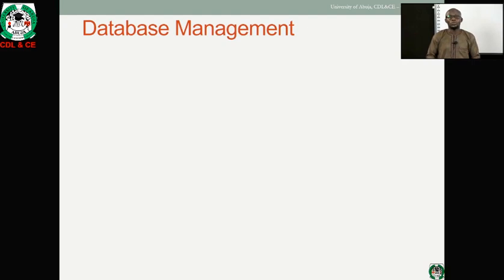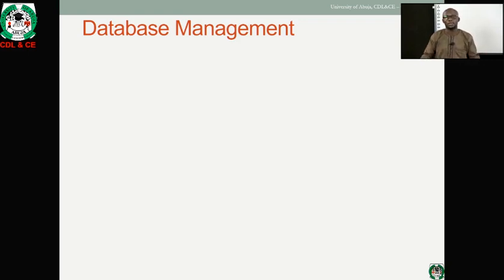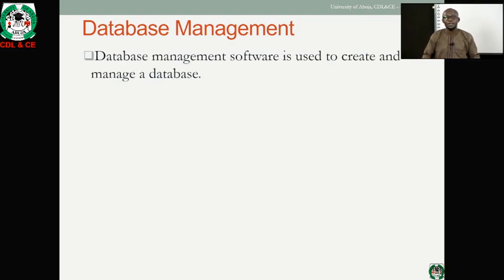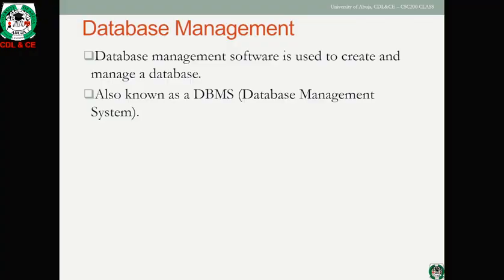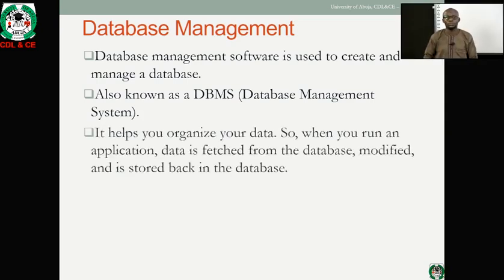The third category of application software is database software. Database software allows us to manage and control our data sets. A database is a collection of interrelated facts about an object of interest. For example, a student database contains facts such as registration number, name, faculty, and department. A Database Management System, or DBMS, helps you organize your data — when an application runs, data is fetched from the database, modified, and stored back.